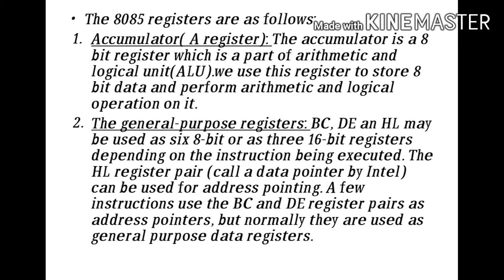The second type of registers present in 8085 are the general purpose registers. B, C, D, E, H, and L may be used as six 8-bit registers or as three 16-bit registers depending on the instruction being executed. The 8085 contains six general purpose registers of 8 bits each. They can be used to store 8 bits of data or combined to store 16-bit data or 16-bit addresses.